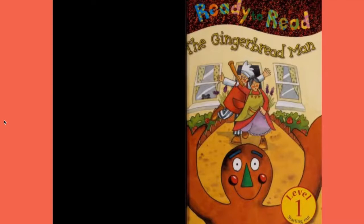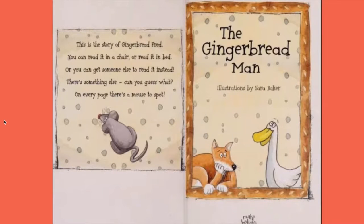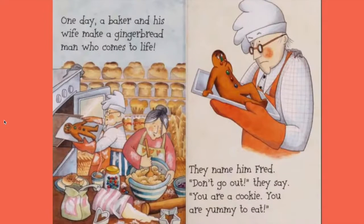Welcome to Dixie Storytime World. Ready to read The Gingerbread Man Level 1. This is the story of Gingerbread Fred. You can read it in a chair or read it in bed, or you can get someone else to read it instead. On every page there's a mouse to spot. One day a baker and his wife make a gingerbread man who comes to life. They name him Fred. Don't go out, they say — you are a cookie.